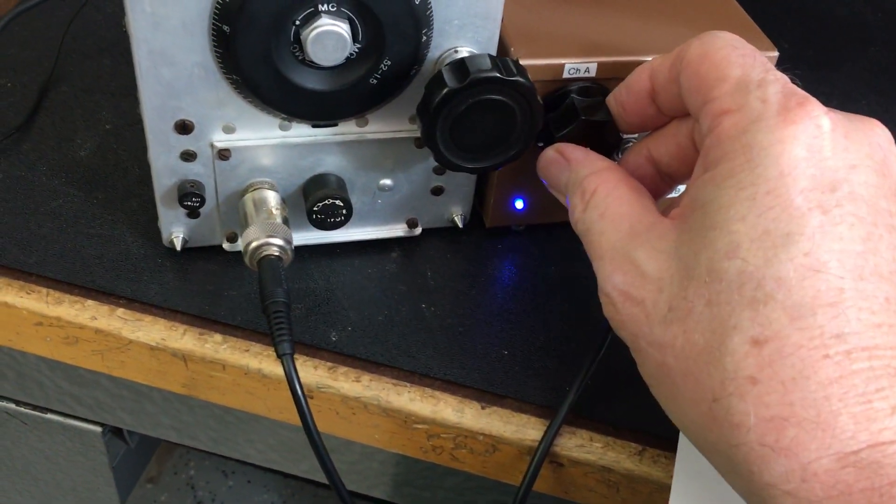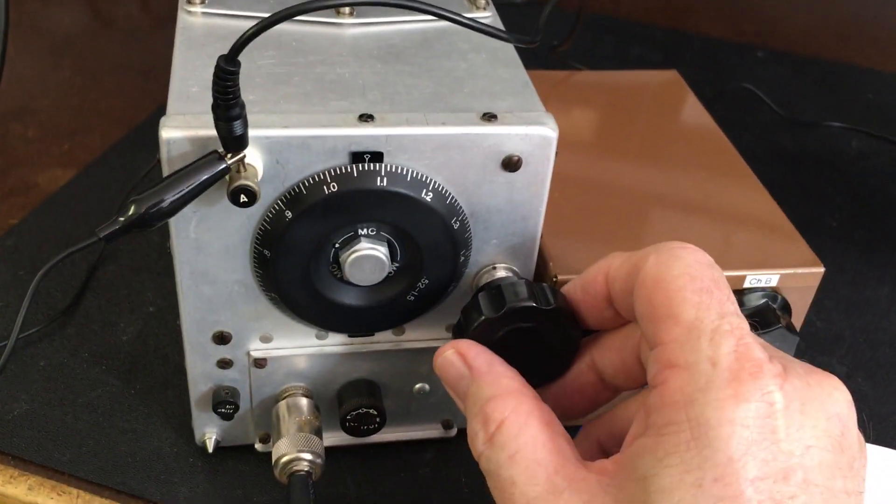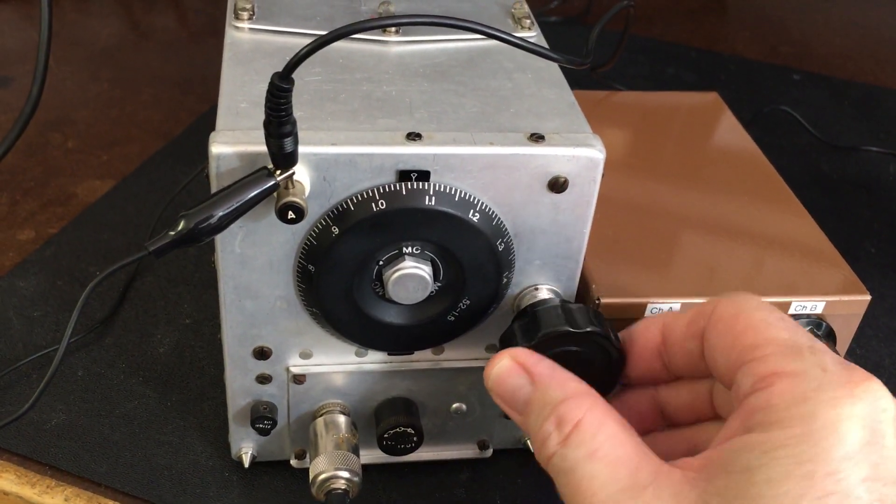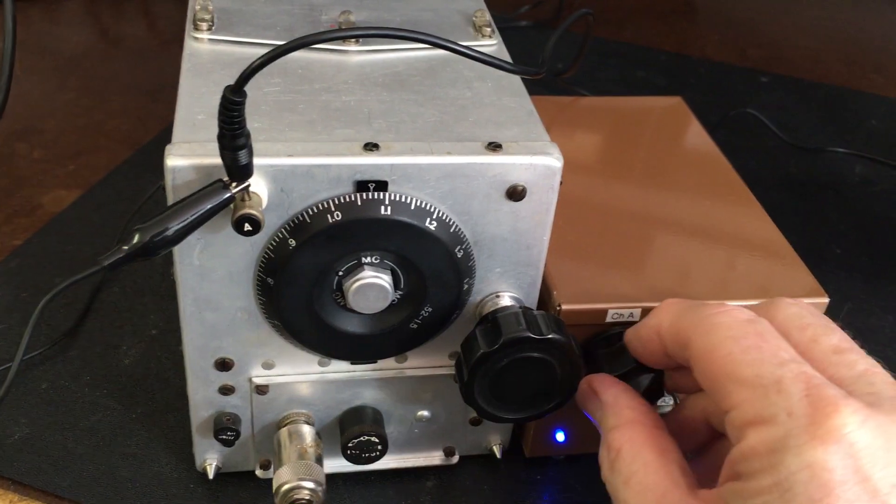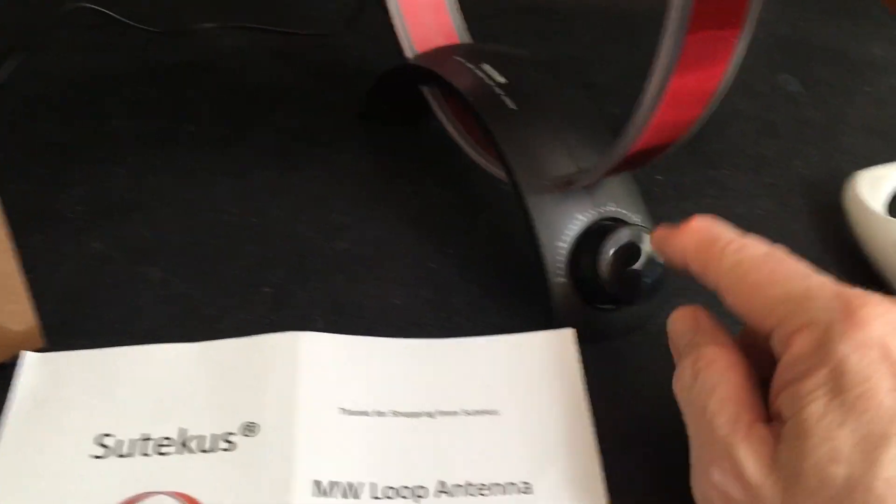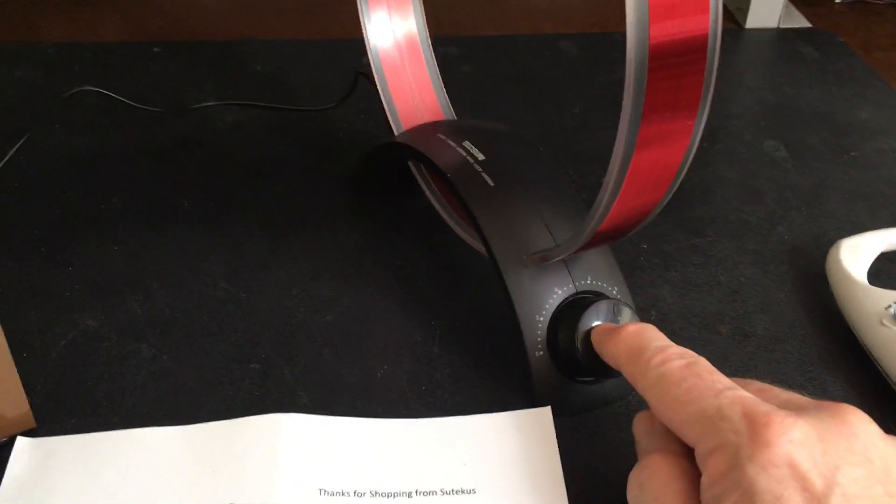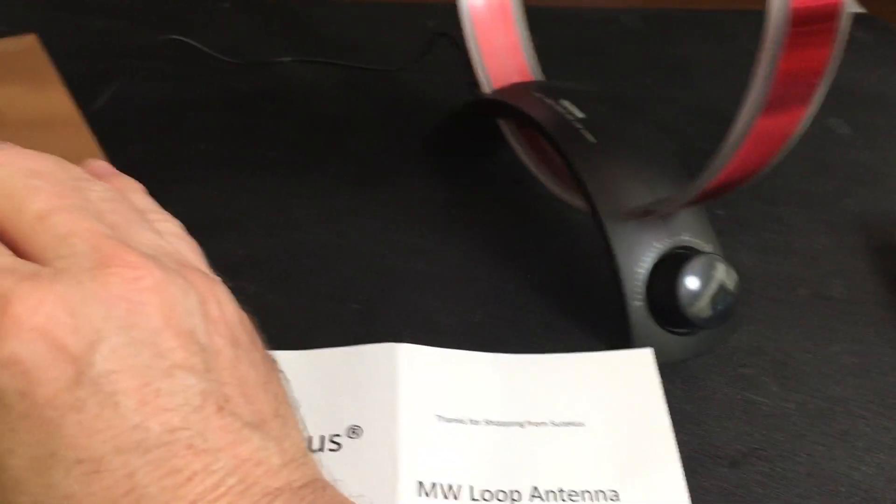So the next thing you want to do, tune in your radio station. Now once that's tuned in, you can come over to your tuning capacitor, variable capacitor, to make this such that it tunes that particular frequency in right on the money. So let's try that, let's turn up the volume.